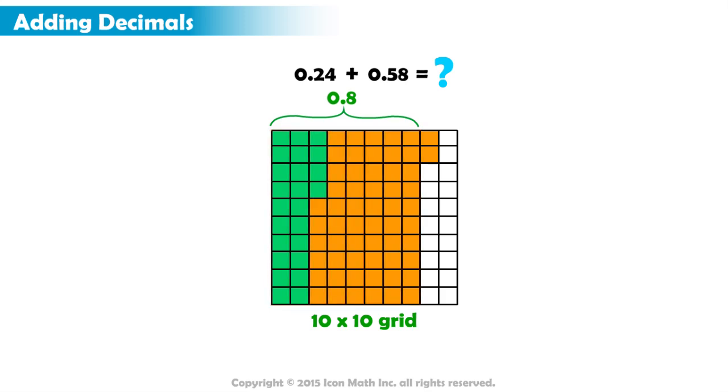We also know that one square represents one hundredth. So these two squares remaining represent 2 hundredths. In total, we have 8 tenths and 2 hundredths, or 82 hundredths. So 24 hundredths plus 58 hundredths equals 82 hundredths.